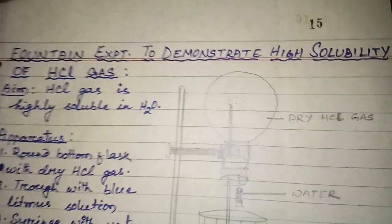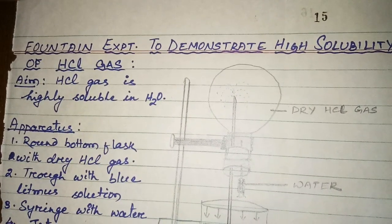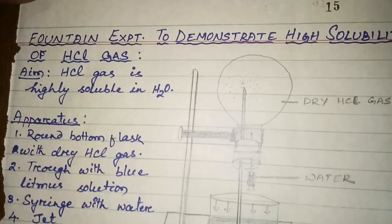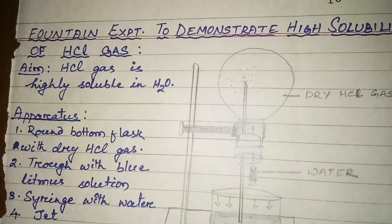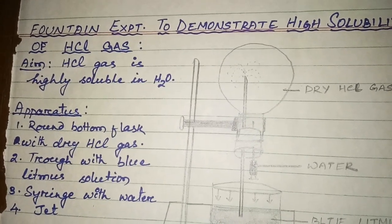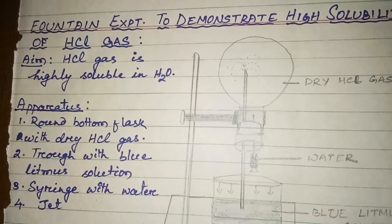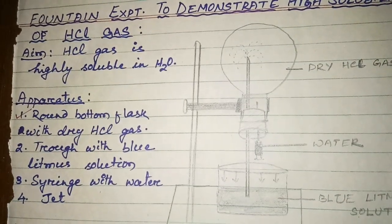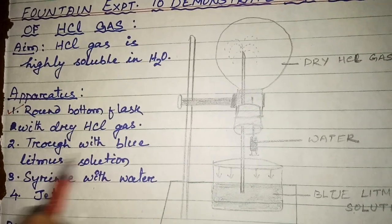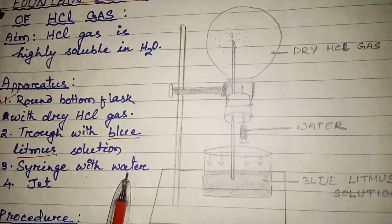The next experiment is the fountain experiment, to demonstrate the solubility of HCl gas. Normally, HCl gas is highly soluble in water. The aim of the experiment is to prove that HCl gas is highly soluble in water. The apparatus used: a round-bottom flask with dry HCl gas, a trough with blue litmus solution, a syringe with water, and a jet.